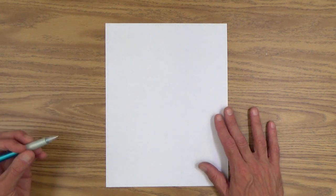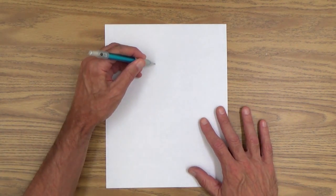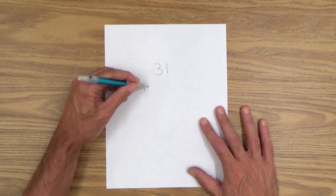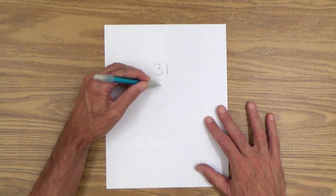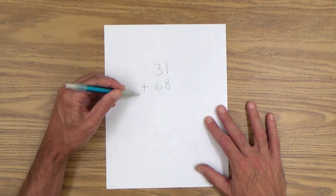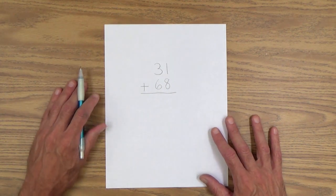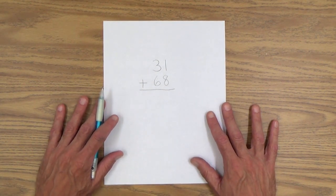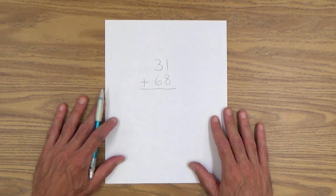So after reviewing this lesson, I thought I might do a little add on here. Perhaps we should do one more of these two digit addition problems together just to solidify that procedure. So let me choose two two digit numbers here. How about these 31 plus 68 equals how many?